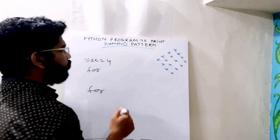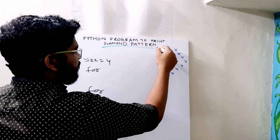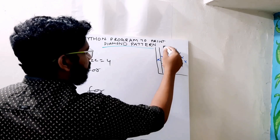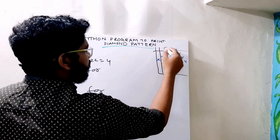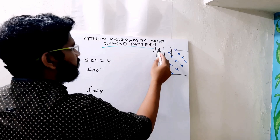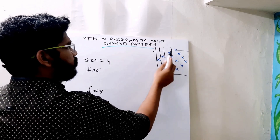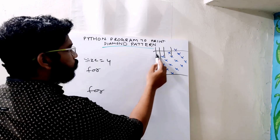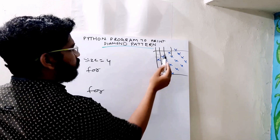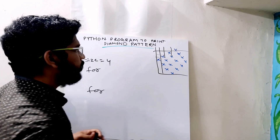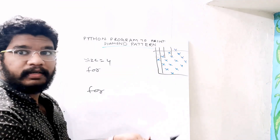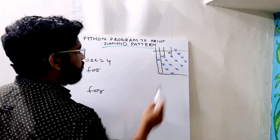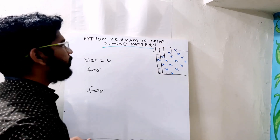Suppose the size is 4. If you see, if you make it as a square and keep it in boxes, you will see there will be three spaces here — this is a space, this is a space, this is a space, and then there is a star. Here there will be two spaces, here there will be one space, and here there will be no space. And for the reverse pyramid, the same will be in reverse pattern. There will be one space, two spaces, and three spaces.